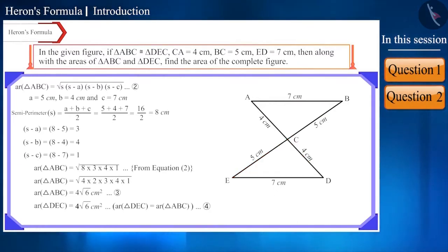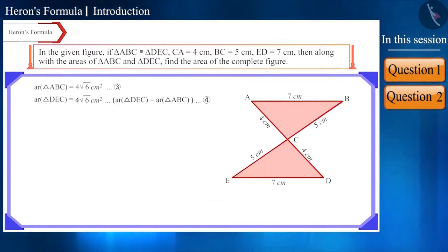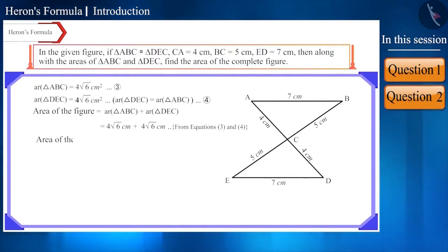Does the answer to this question end here? No. We have to find the area of the complete figure, which will be equal to the sum of the areas of triangle ABC and triangle DEC. So, the area of this figure will be 8√6 cm².